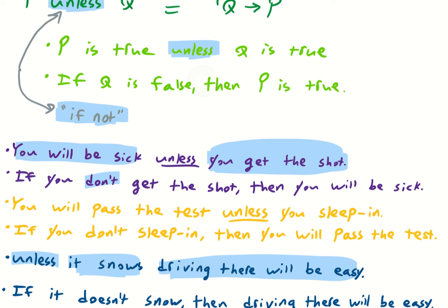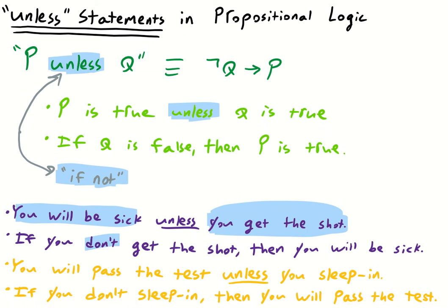So now we have the knowledge and tools necessary to translate unless statements into propositional logic. P unless Q means if not Q, then P. Because it's saying P is true unless Q is true. But that just means that if Q is false, then P is true.